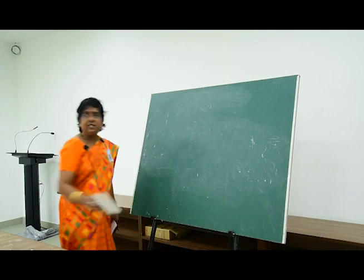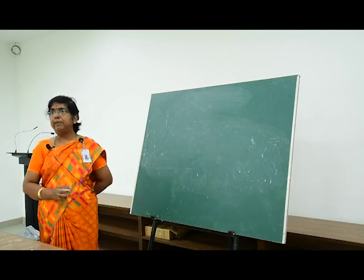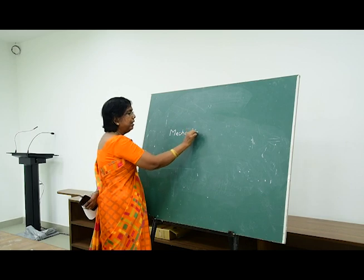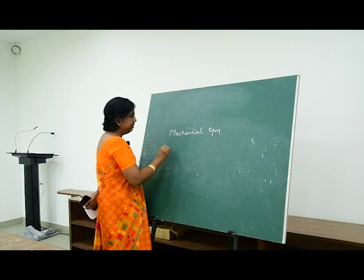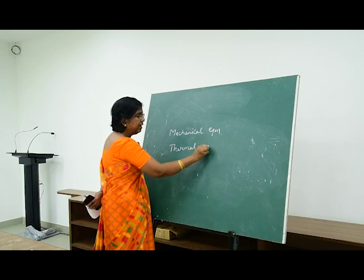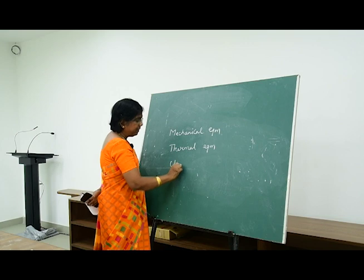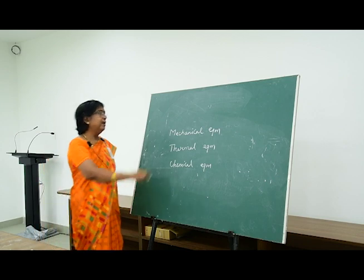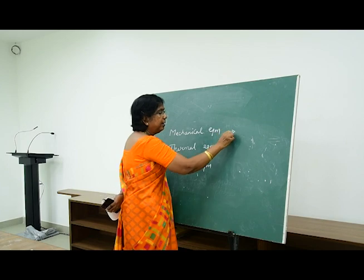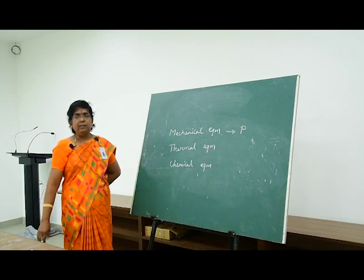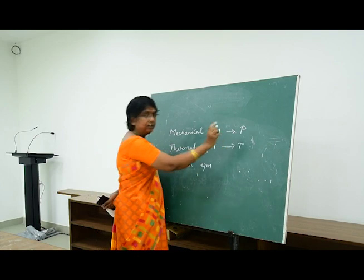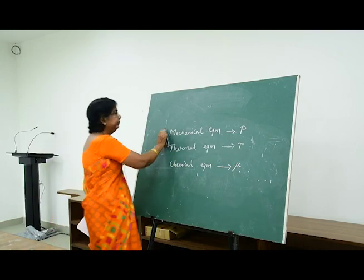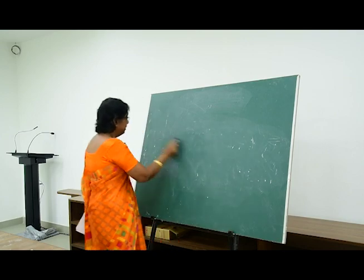The systems must be in equilibrium. There are different types of equilibrium. One is mechanical equilibrium — when we say a system is in mechanical equilibrium, pressure is constant in all phases. Thermal equilibrium means temperature is constant. Chemical equilibrium means the chemical potential μ is constant.